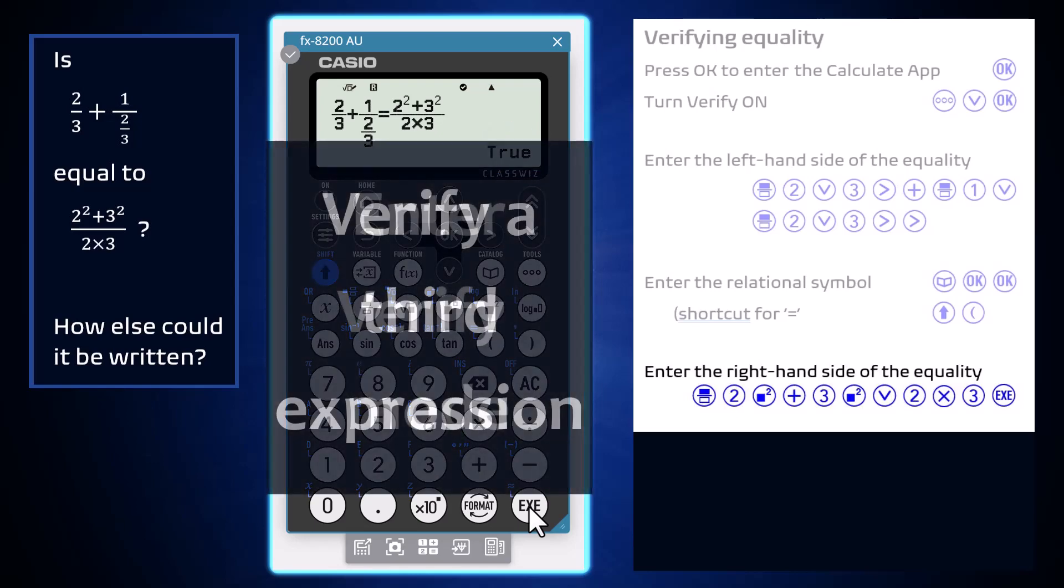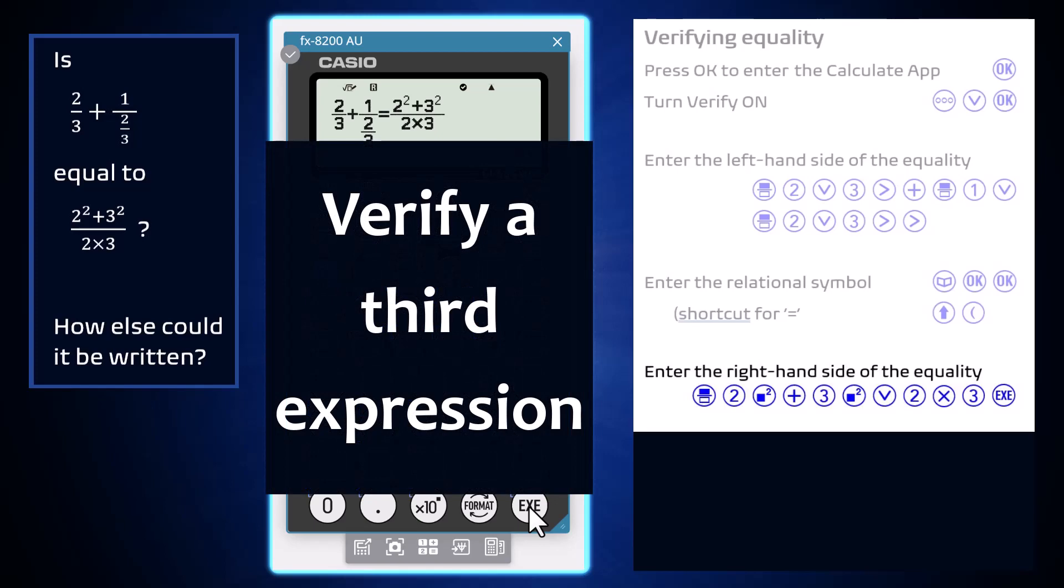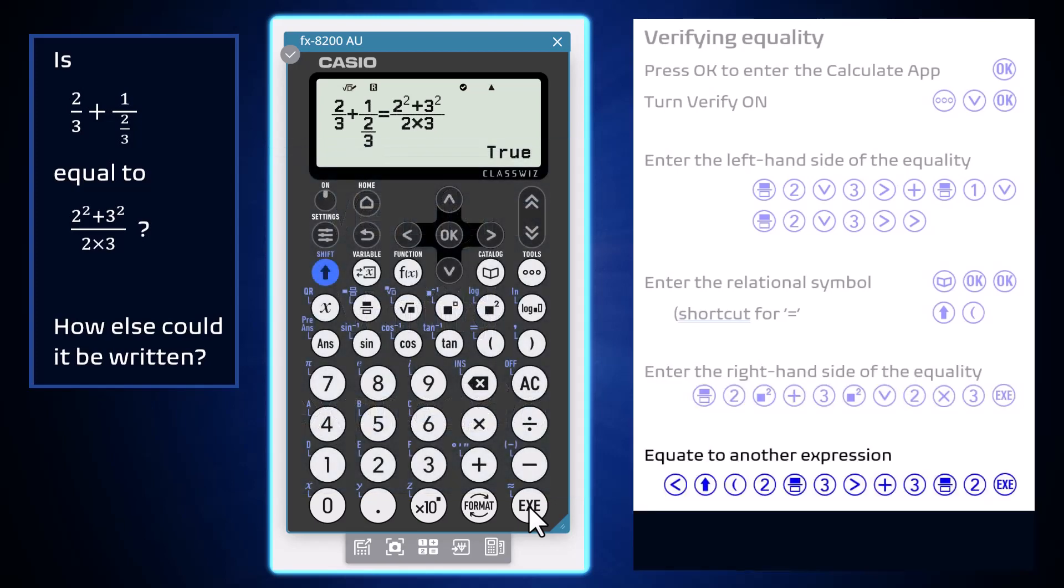The equality of a third expression can be verified by arrowing back into the input line. I'm going to use shift and the left bracket to enter equals, and then enter 2 over 3 plus 3 over 2.